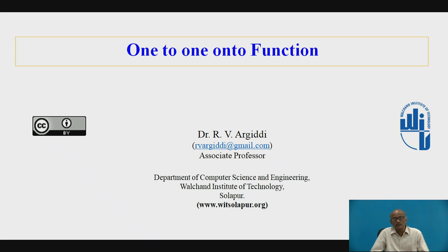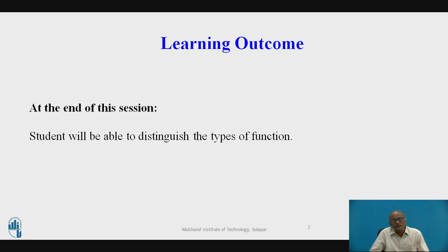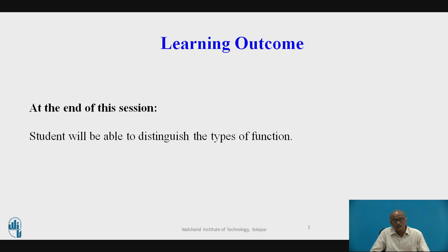What is a one-to-one onto function? What are the examples of this particular function? The learning outcome is that the student will be able to identify or distinguish the type of function — whether it is onto, into, one-to-one, or one-to-one onto.